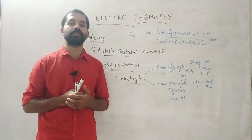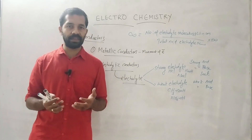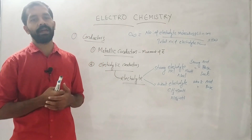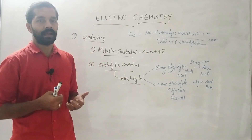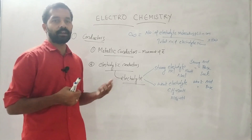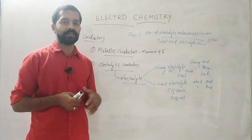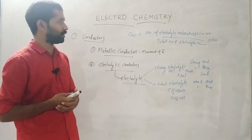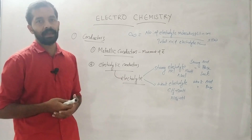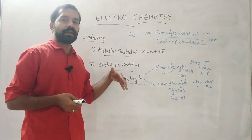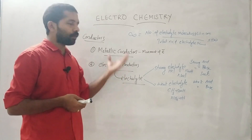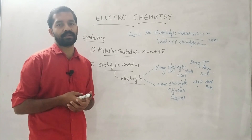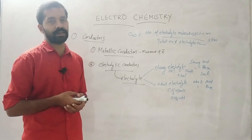Electrolytic conductors are substances which allow the passage of electricity in their molten state or in aqueous solution, and they undergo chemical change. Metallic conductors pass electricity through electron movement, while electrolytic conductors pass electricity through ion movement.